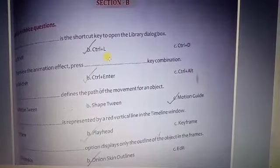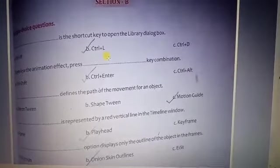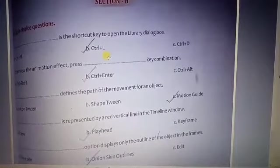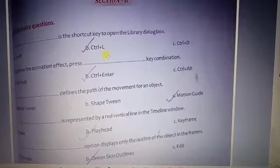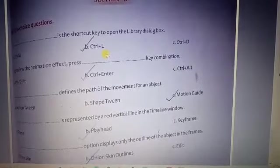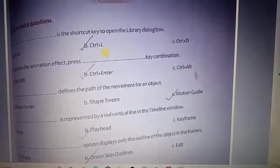By pressing Ctrl+Enter or Test Movie, whatever you have selected, it can show the output of the animation. Third: Motion Guide defines the path of the movement for an object.